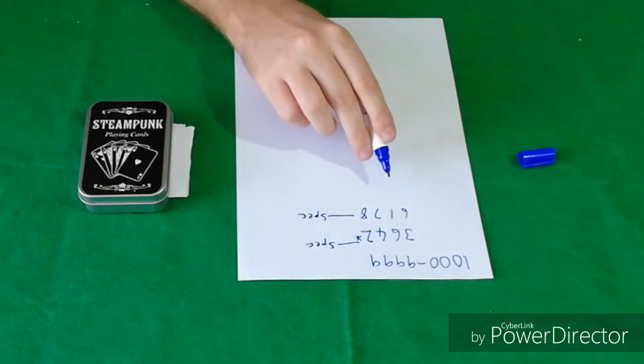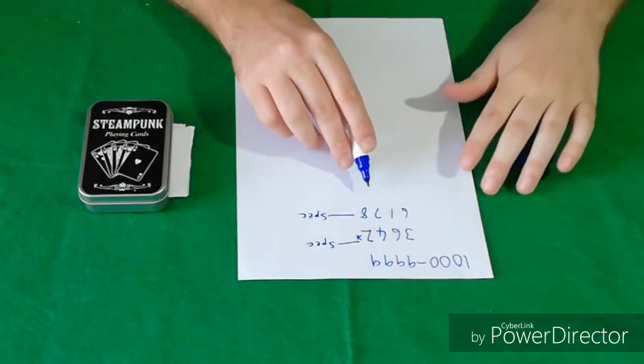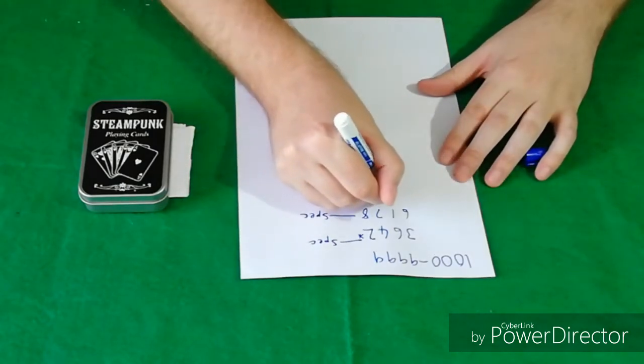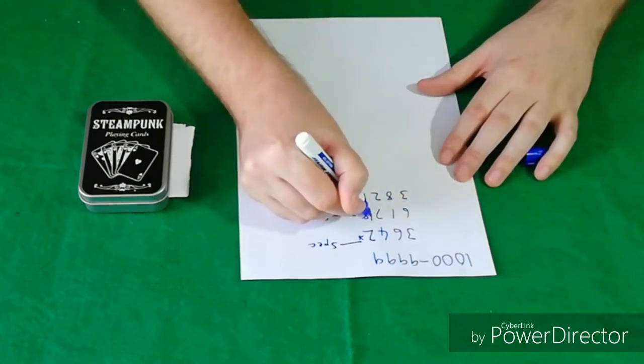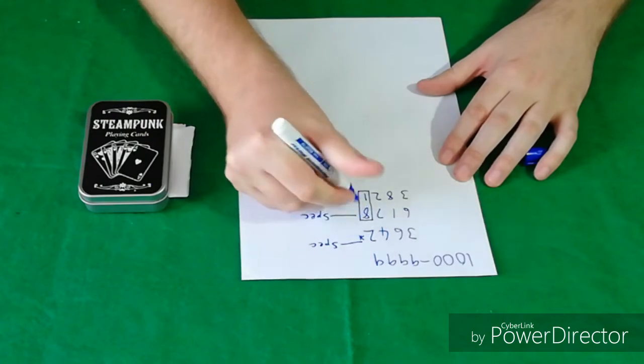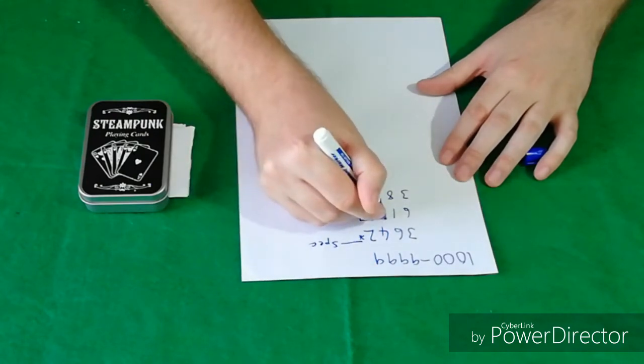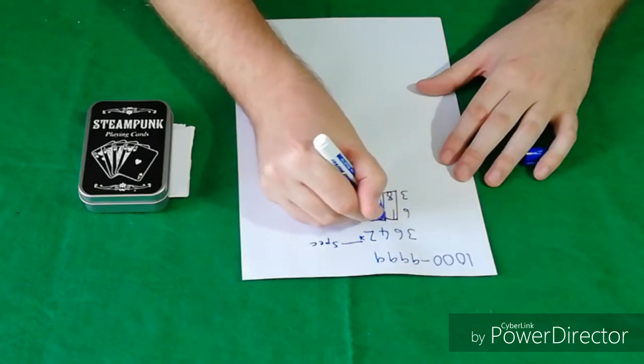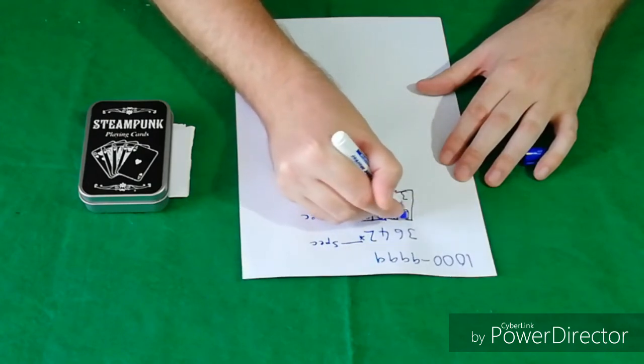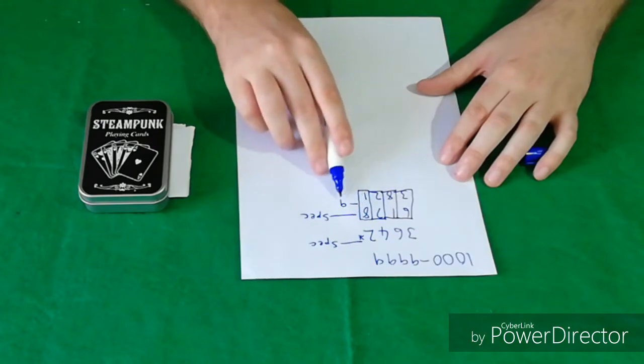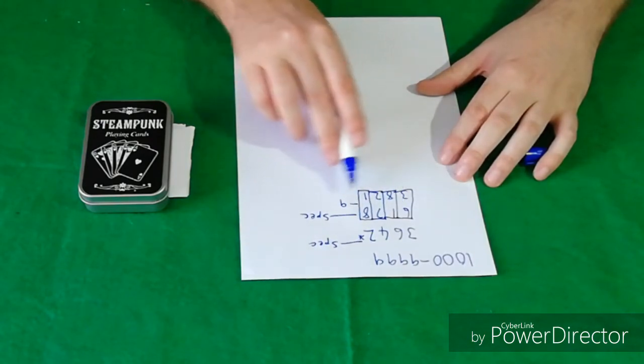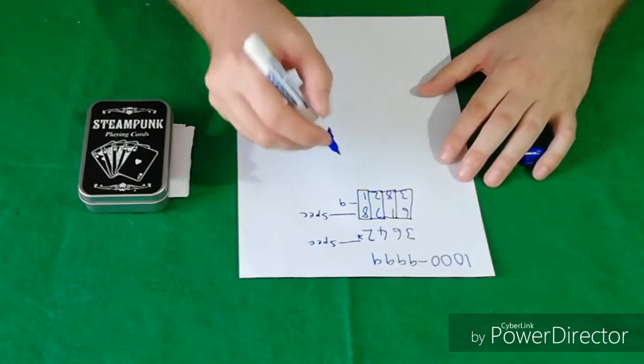Then what you do is you write the next number. Now what you need to make sure of is that this adds up to 9, this adds up to 9, this adds up to 9, and this adds up to 9. As you can see 8 plus 1 is 9, 7 plus 2 is 9, 1 plus 8 is 9, 6 plus 3 is 9.